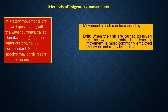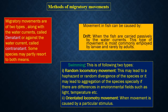Movement in fish can be caused by drift, when the fish are carried passively by water currents — this is most commonly employed by larvae and rarely by adults — or by swimming. Swimming is of two types: random locomotory movement, which may lead to haphazard or random divergence or aggregation of the species, especially if there are differences in environmental fields such as light and temperature; and oriented locomotory movement, when movement is caused by a particular stimulus.